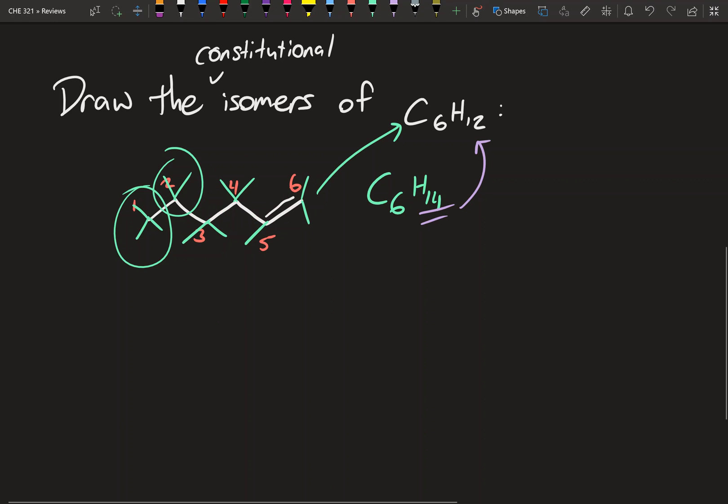And now what we have to do is we have to draw the rest of the isomers. And so I know this unit is called conformational analysis of alkenes. And this is an alkene, but this is included actually in the content for this part of the class. And so if you're wondering what the name is for this molecule, it's going to be 1-hexene.